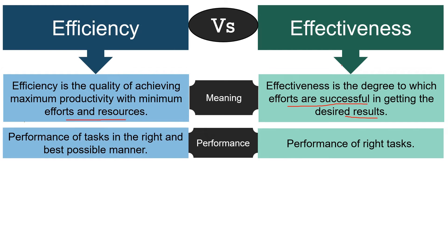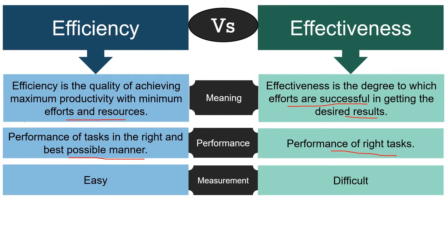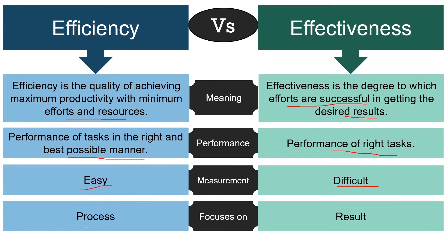Next, performance: efficiency is when you perform the task in the right and best possible manner, whereas effectiveness is when you perform the right task. While efficiency is easily measurable by analyzing specific metrics, effectiveness is difficult to measure. Further, while efficiency focuses on the process, effectiveness focuses on the result.